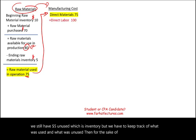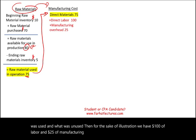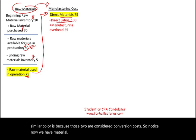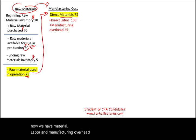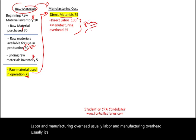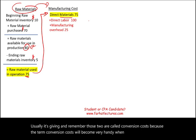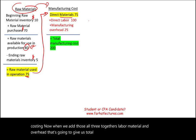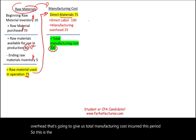For illustration we have $100 of labor and $25 of manufacturing overhead. Those two are considered conversion costs — labor and manufacturing overhead together are called conversion costs, a term that becomes very handy when we talk about process costing. When we add all three together — material, labor, and overhead — it gives us total manufacturing cost incurred this period: $200. That's $75 plus $100 plus $25.